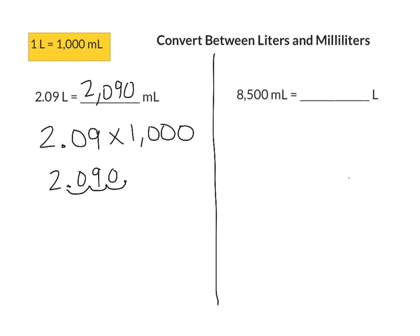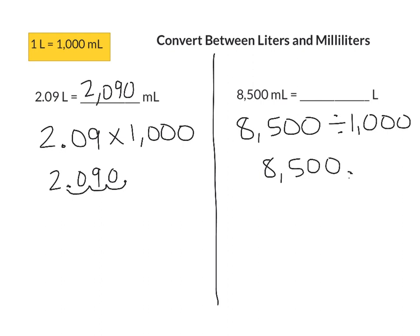Next let's look at going from milliliters to liters. When you're going from a smaller unit to a larger unit, you're going to be dividing by the conversion factor. So we take 8,500 milliliters and divide by 1,000, moving our decimal point three places to the left — one, two, three. That tells us it is equal to eight and a half liters.